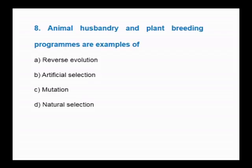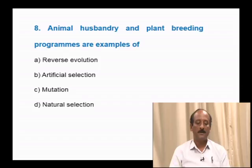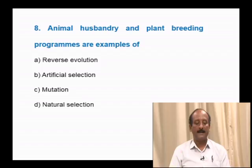Question number 8: Animal husbandry and plant breeding programs are examples of — reverse evolution, artificial selection, mutation, natural selection. The development of new hybrid varieties of animals through animal husbandry and obtaining new plant varieties through breeding programs are artificial techniques carried out by human beings. Therefore, the correct answer is artificial selection.